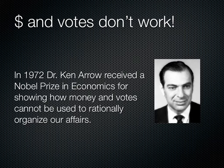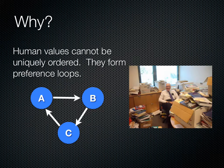Kenneth Arrow received the Nobel Prize in Economics in 1972 from Stanford for showing just how money and votes cannot be used to rationally organize our affairs. Why don't money and votes work the way we think they do? It's because they reflect human values, and human values cannot be uniquely ordered. They form preference loops.